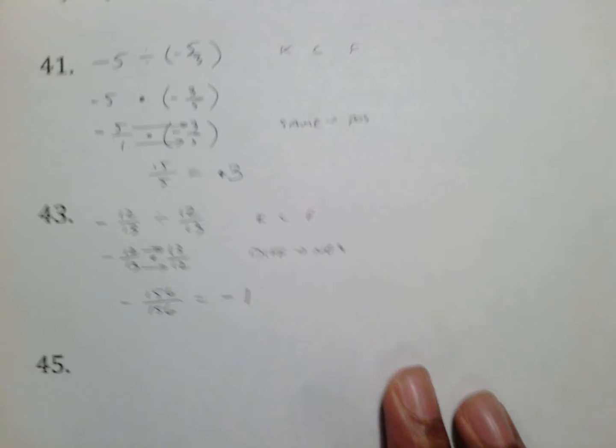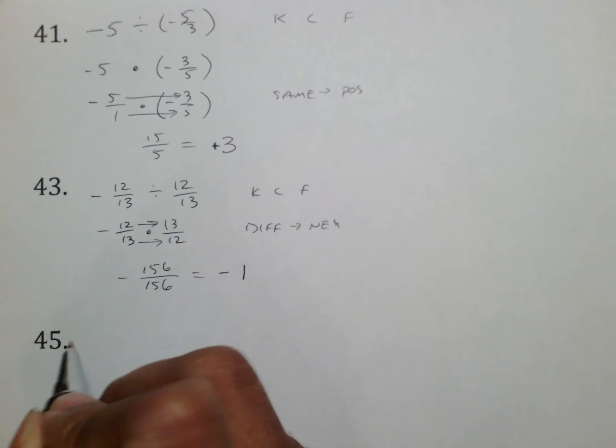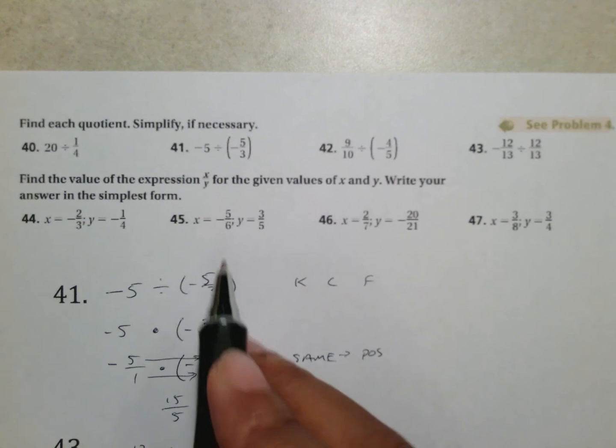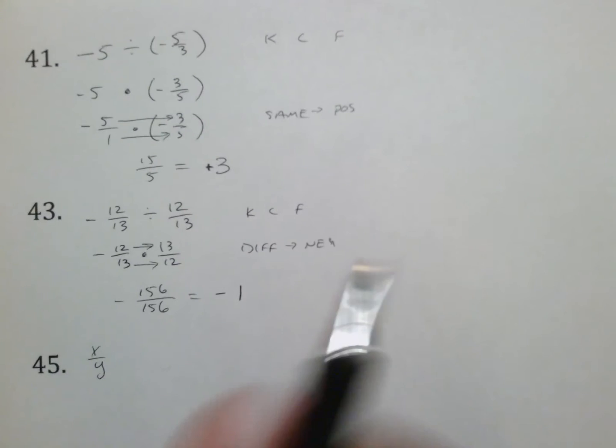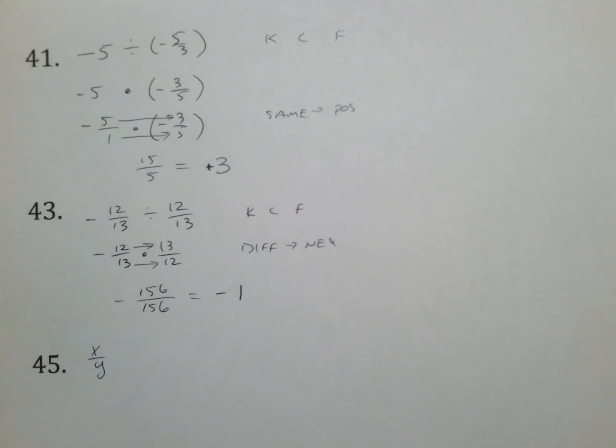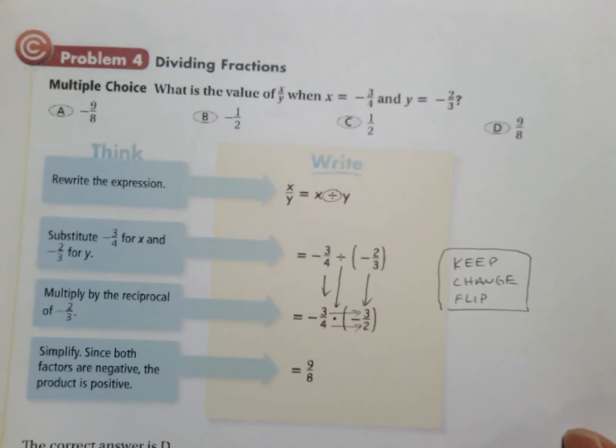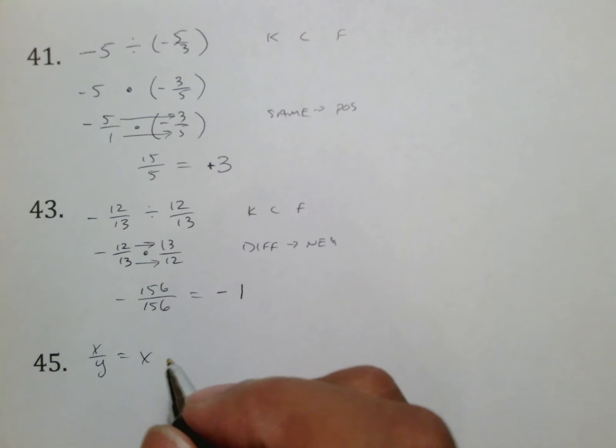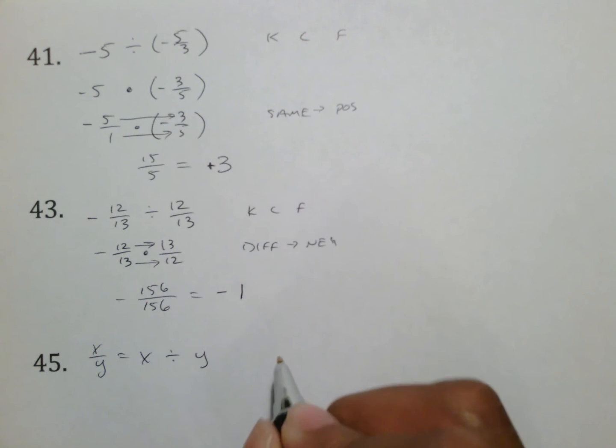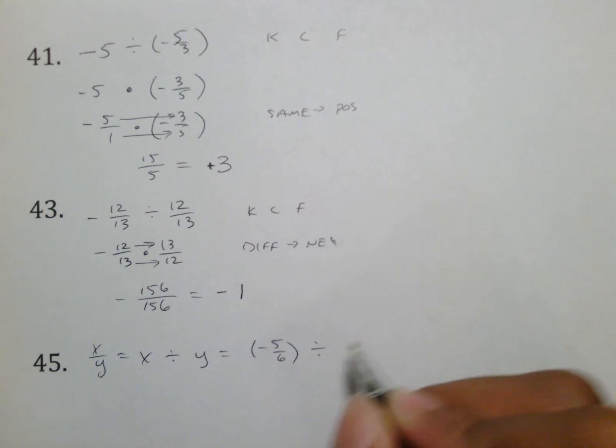It looks to me like 45 is similar to what we saw in our note there. They want to find the value of x over y. And in 45, it tells me that x is negative 5 sixths, and that y is negative 3 fifths. So I remember in these notes that the first thing they did was rewrote as a division problem, which is what we're going to do. So we're going to write x divided by y, and then substitute. So x equals negative 5 over 6 divided by y, which is negative 3 over 5.